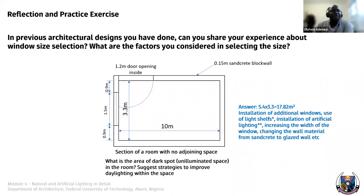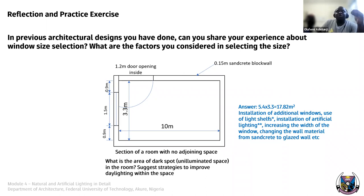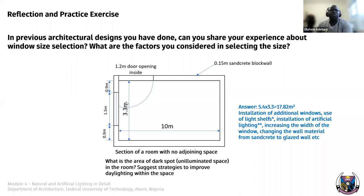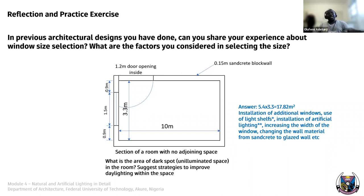Please let us all mute. Now with this space you can calculate — the rule of thumb says that the depth of effective illumination will be from 1.5 to twice the head height of that window. Once you know the height of the window you can calculate where the dark spots of that space will be. We believe the window is 1.5 by 1.5 metres in height, installed at a height of 900 mm.